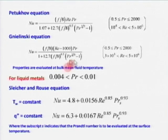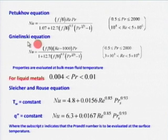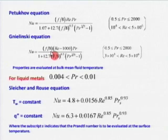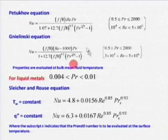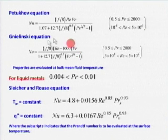Around 1975, Gnielinski collected data over the next 25 years beyond Dittus-Boelter and fit a correlation in terms of friction factor. This correlation can be partially derived from fundamentals — specifically from the universal velocity and temperature profiles. Only the constant 12.7 was tweaked based on experimental data. So it is semi-empirical, not purely empirical like Dittus-Boelter.